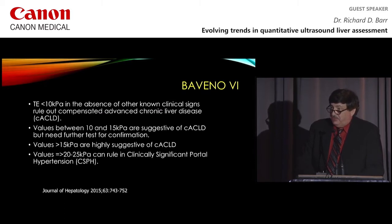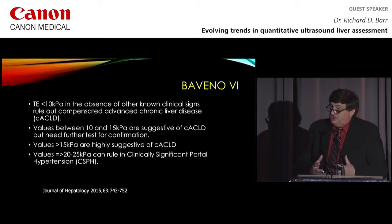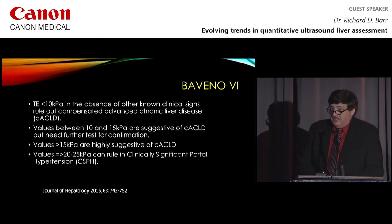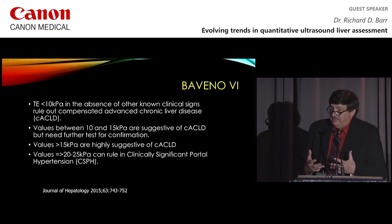The Baveno 6 conference — a conference of hepatologists looking at portal hypertension for transient elastography — recommended these guidelines. A transient elastography of less than 10 kilopascals in the absence of other known clinical signs rules out compensated advanced chronic liver disease (cACLD). Values between 10 and 15 kilopascals are suggestive of cACLD but need further testing for confirmation. Values greater than 15 kilopascals are highly suggestive of cACLD, and values greater than 20–25 kilopascals can rule in clinically significant portal hypertension.